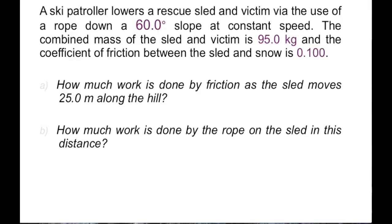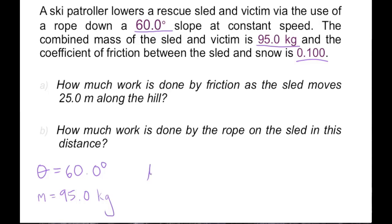Now let's return to our problem and look at the given values. We have a theta value of 60 degrees, a mass of 95 kilograms, and a coefficient of friction between the sled and snow of 0.1. Because the sled is moving, that is a coefficient of kinetic friction equal to 0.1. Part A also gives us a displacement of 25 meters.